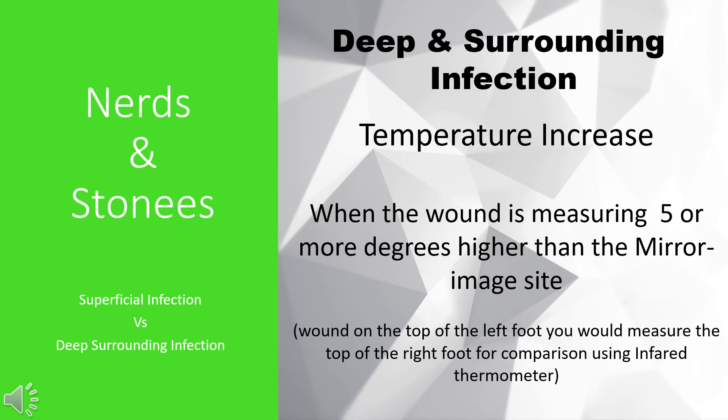A wound is considered to have a temperature increase when the wound is measuring 5 degrees more than a mirror image site. For example, if there was a wound on the top of the left hand, you would measure the wound base and also measure the top of the right hand using an infrared thermometer. If there's a 5 degree difference, that means there is a temperature increase.